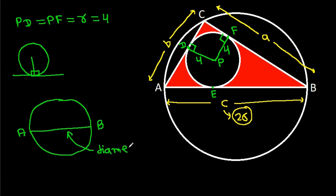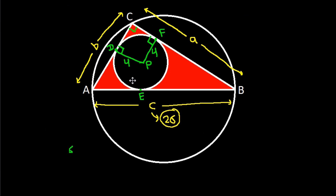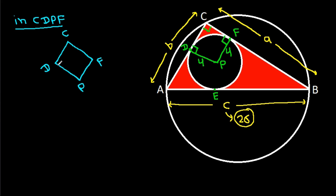Angle ACB will be 90 degrees, since AB is a diameter. Now in quadrilateral CDPF, angle ACD, angle PD, and angle PF — these three angles are 90 degrees, so this angle will also be 90 degrees. And we have PD equal to PF, that is 4.